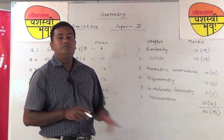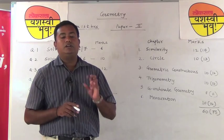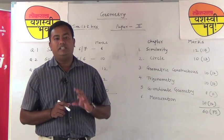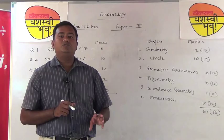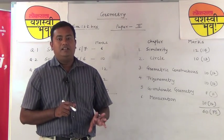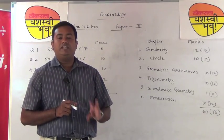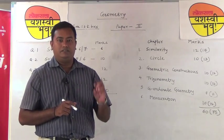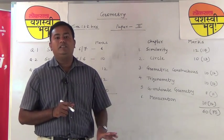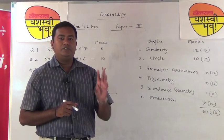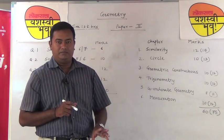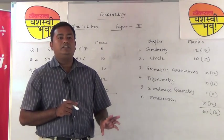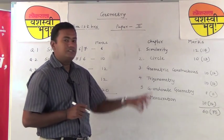Remember, for the theorem you have to refer to the textbook method — you are not allowed to change the method. The theorem has to be as per the textbook method. For theorems, the diagram is very important. Even if you write the entire theorem but the diagram is not drawn, no marks will be given. So, the diagram has to be drawn, then write the theorem using the textbook method. Learn all the theorems given in the first 2 chapters.